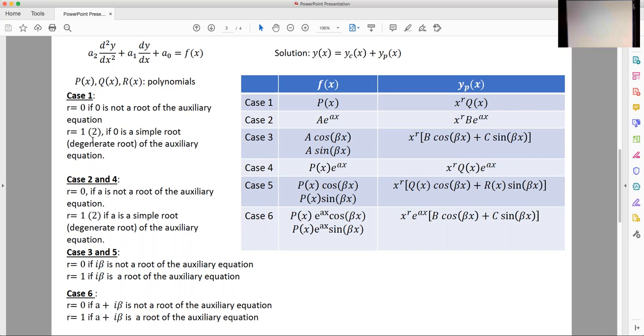And it's equal to one if zero is a simple root, so a distinct root of the auxiliary equation, and it's equal to two if zero is a degenerate root. So both roots of the auxiliary equation are equal to zero.